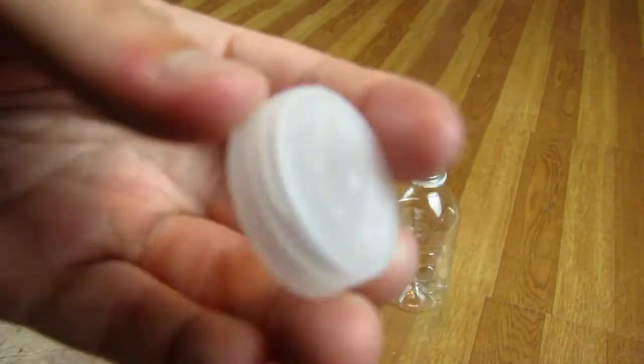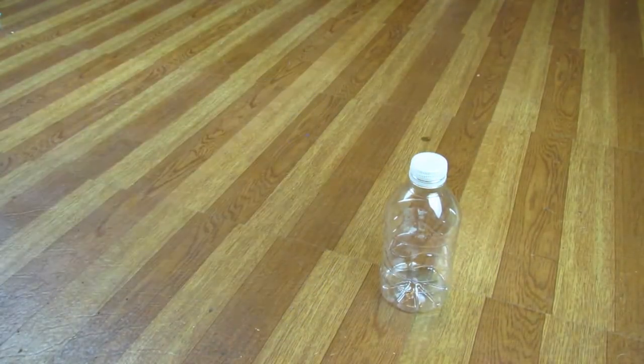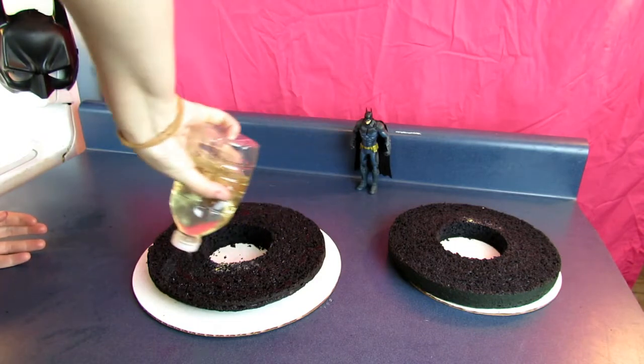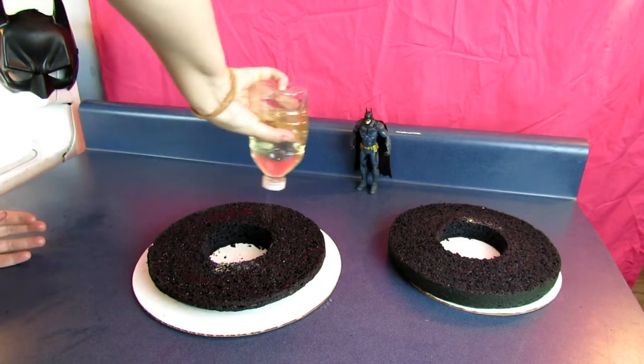After you get plenty of holes poked into it, you think it's a good distribution, you're done. That is it. You just make some simple syrup, put it in it, and squirt your cakes beautifully.